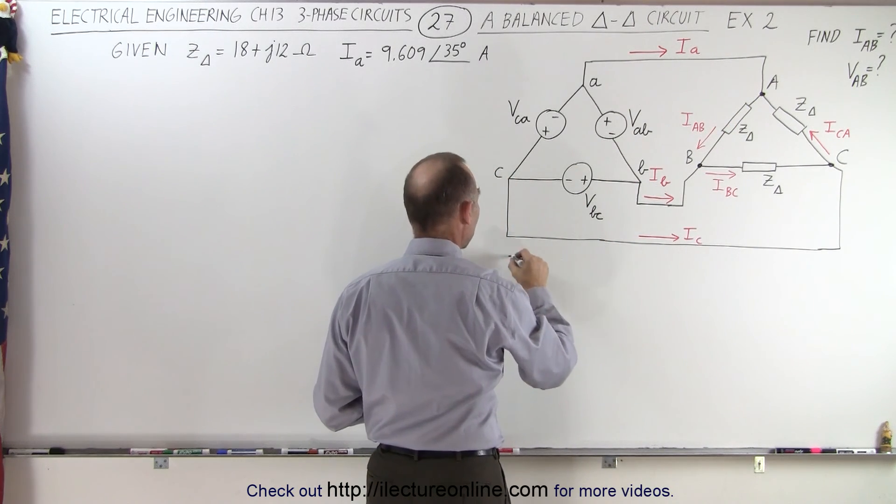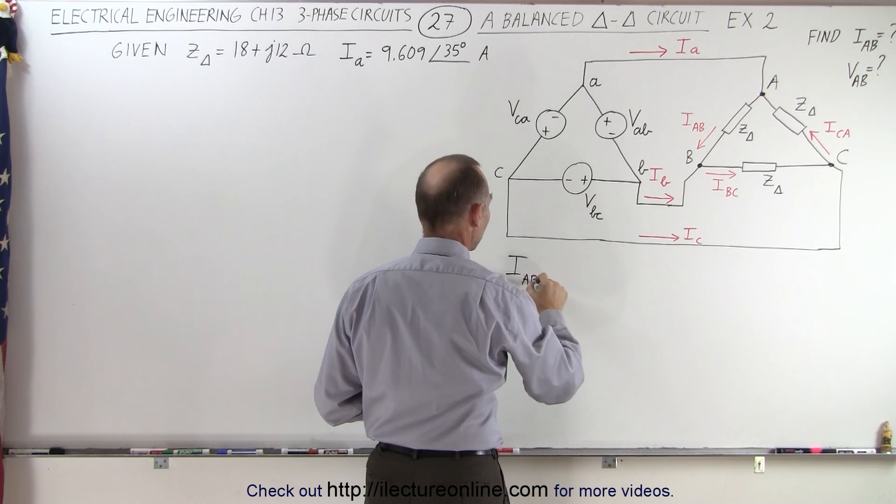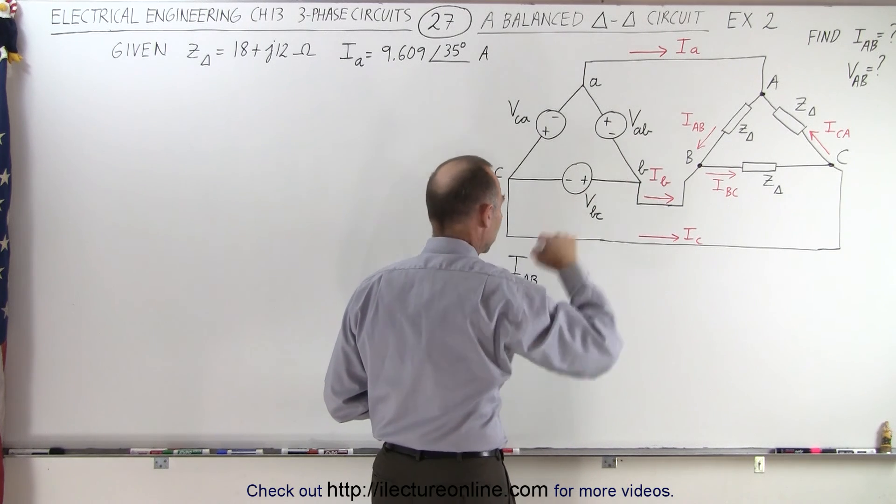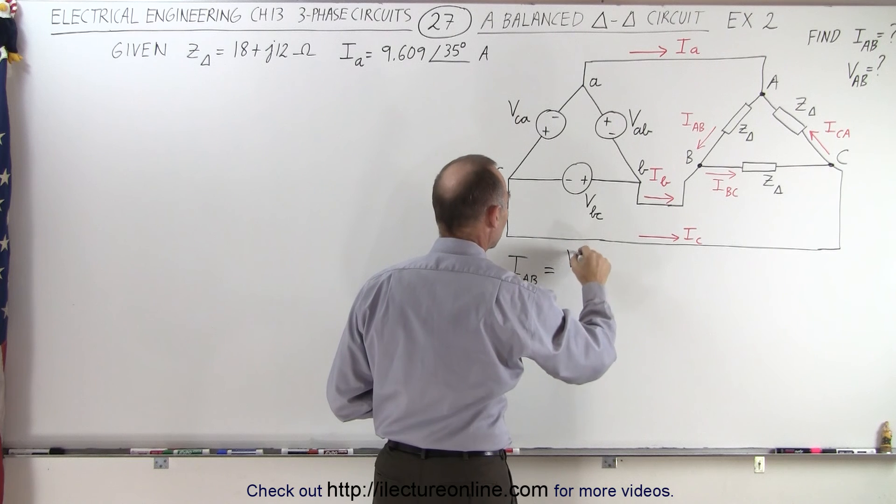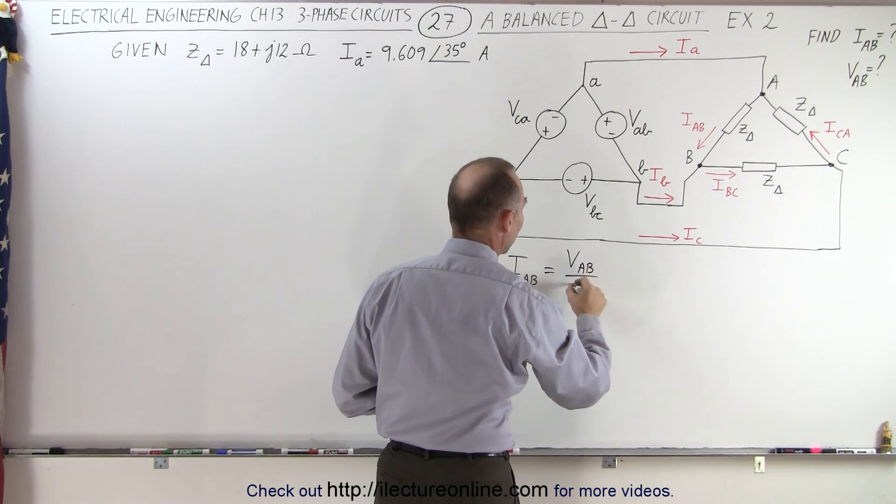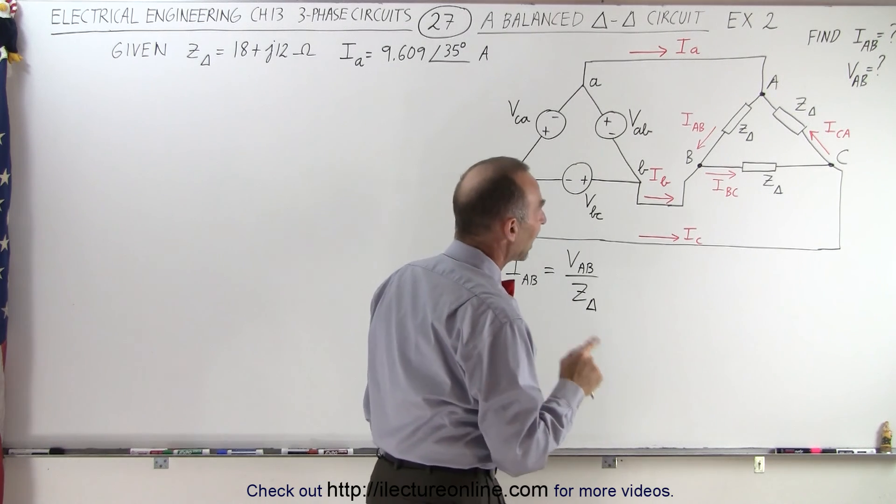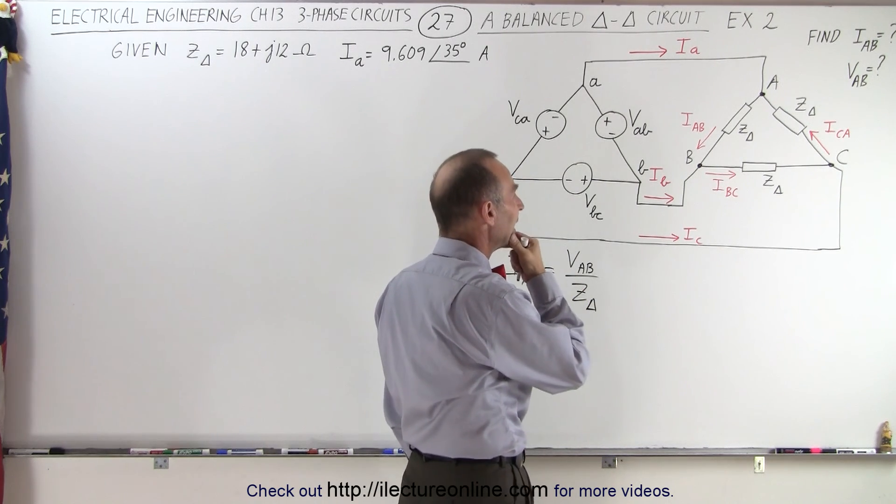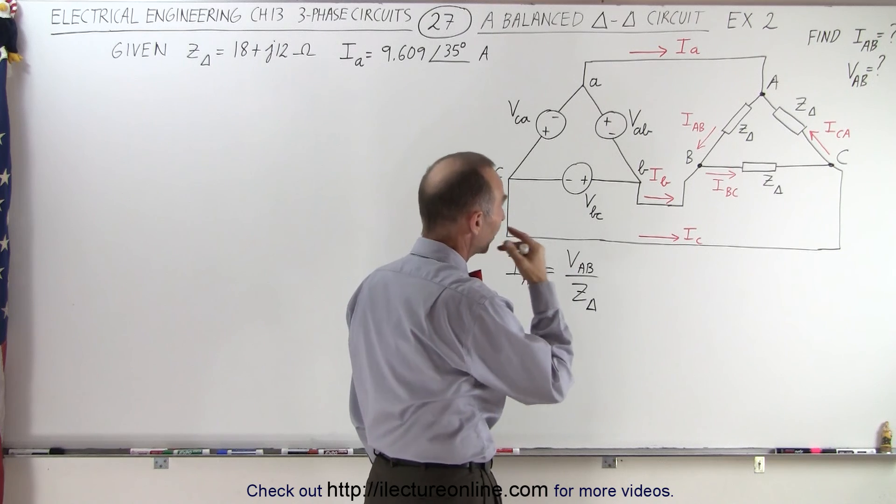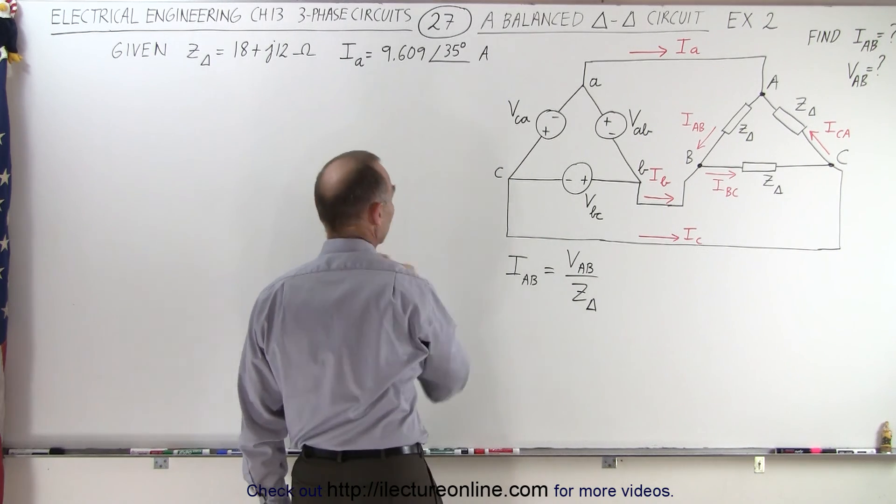At the load, we can say that IAB, the phase current through the load, is going to be equal to the voltage VAB divided by the impedance. But notice, we are not given IAB, and we're not given VAB. We're given the impedance, and we're given the line current.